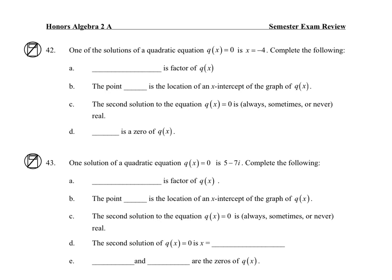So for 42, if x = -4, then that means that x + 4 is a factor. The x-intercept is -4, it says a point, so that's why I had to write it as a coordinate. The second solution is always, sometimes, or never real. So that's always, and -4 is a 0, it's also called a root.